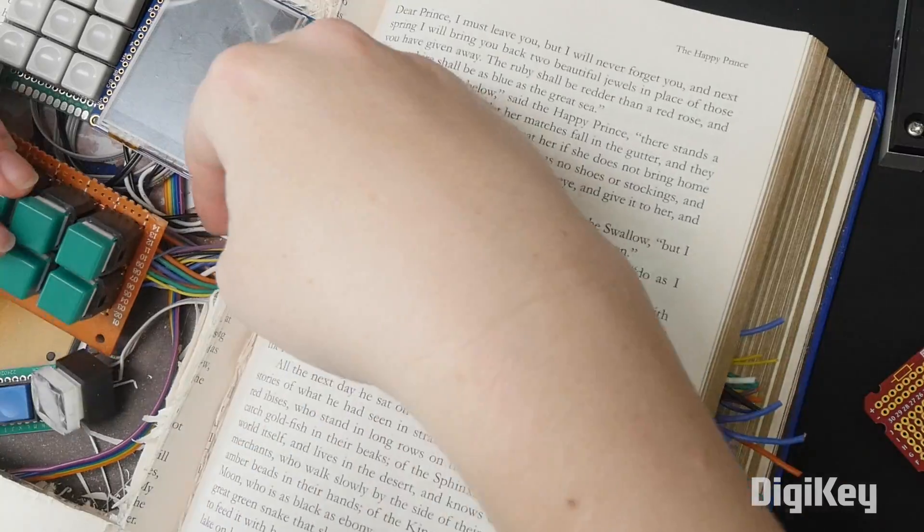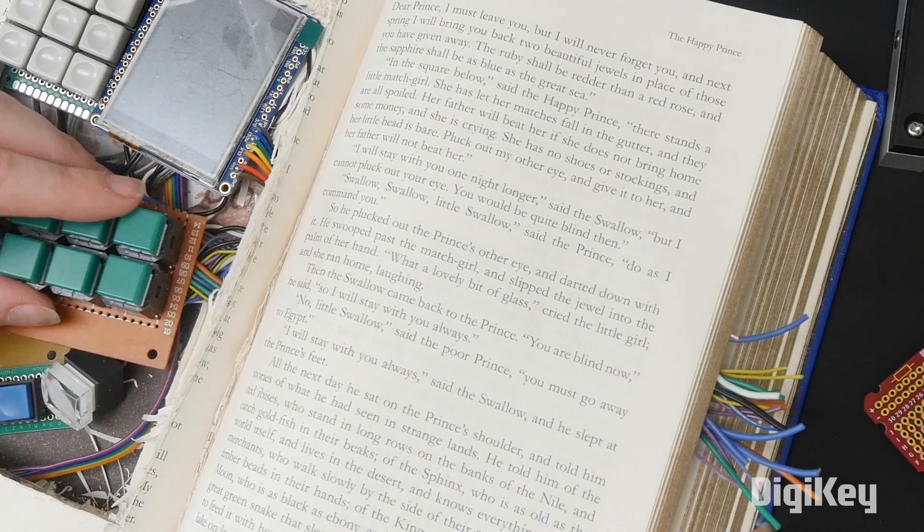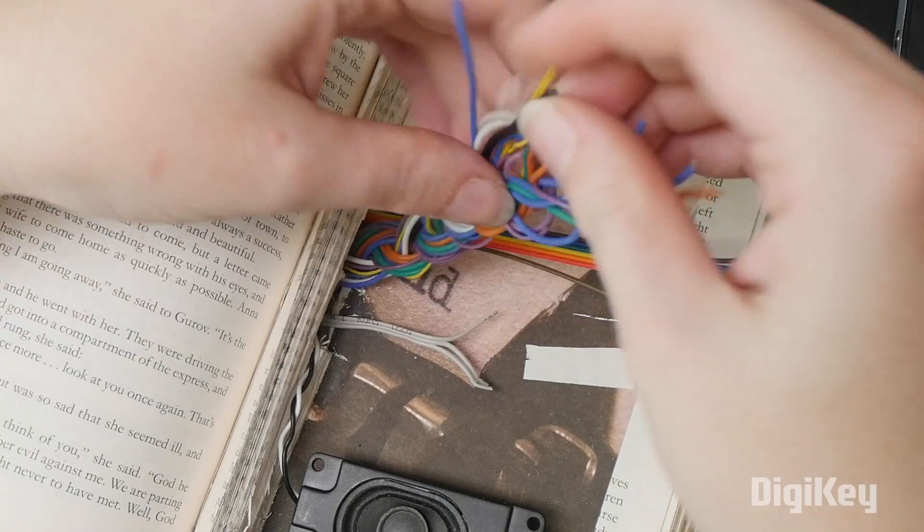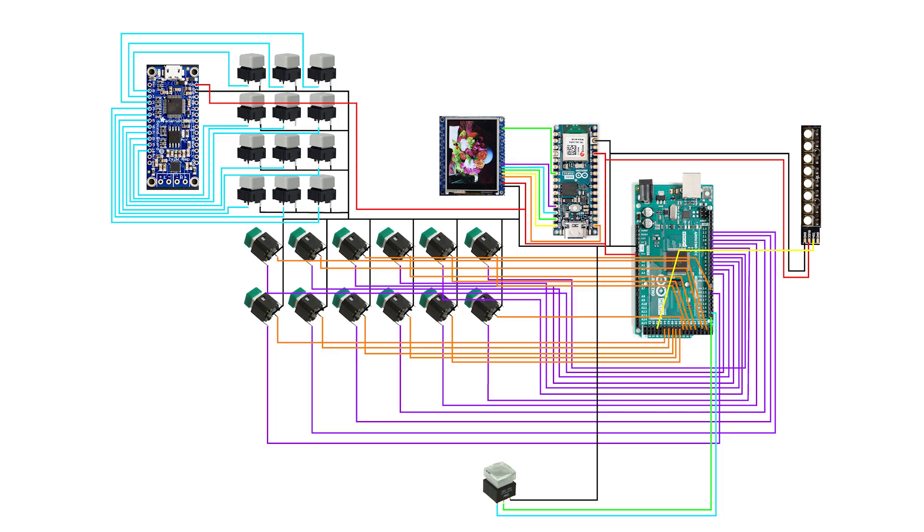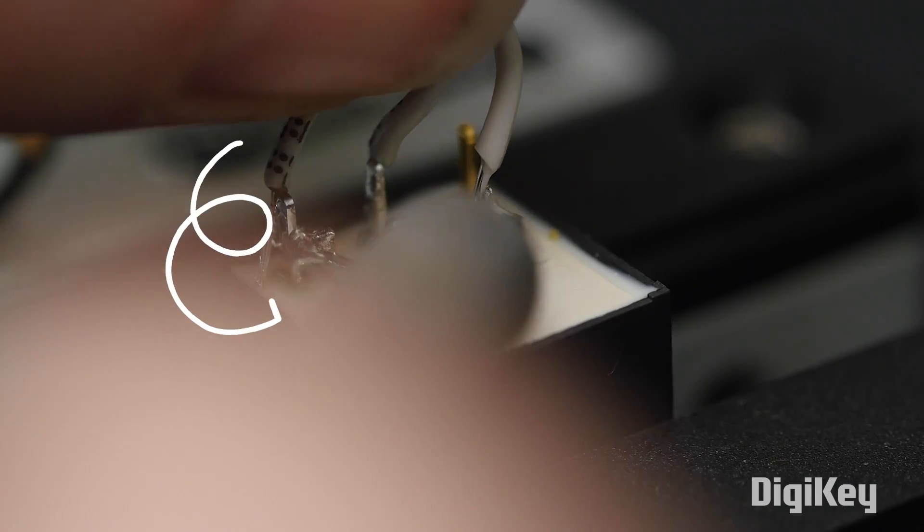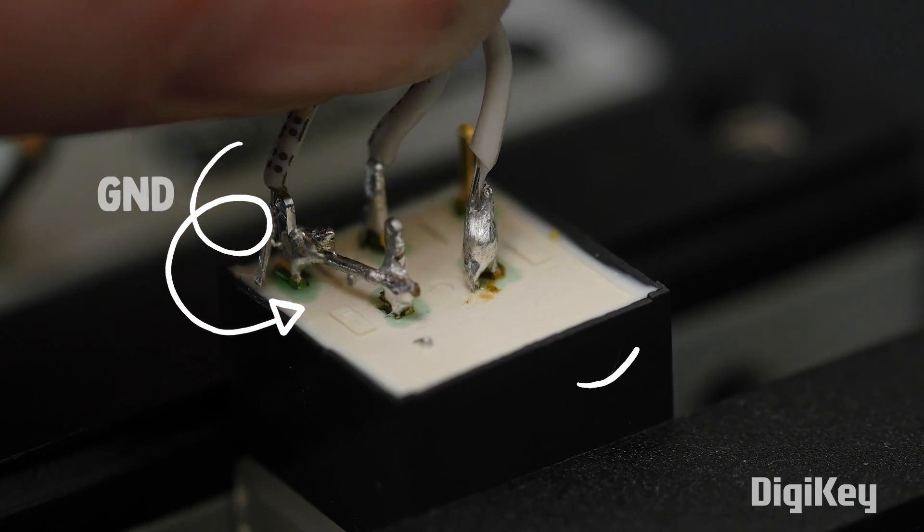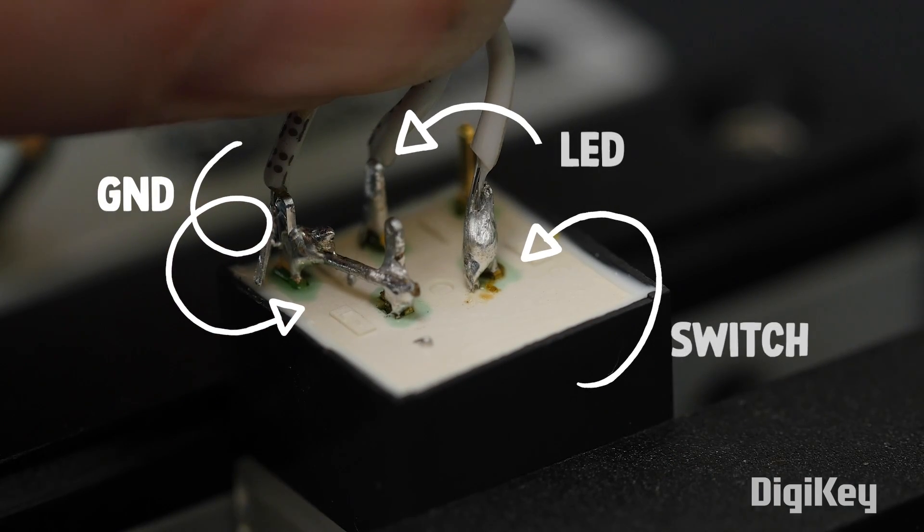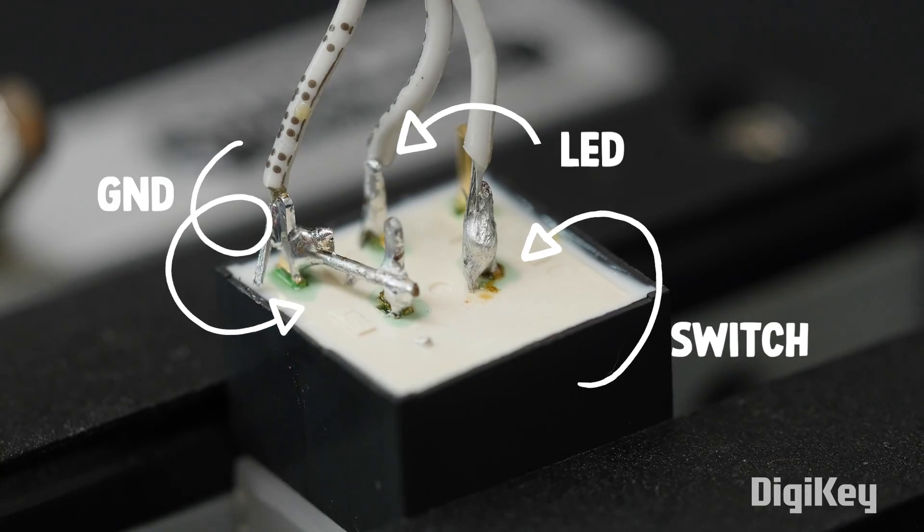I wired up the rest of the green button panel and fed its stranded wires through the hole I had cut through the spine. Each button is wired up like the big white one shown here. All grounds are connected to one wire, then another two wires go to the switch and the LED.